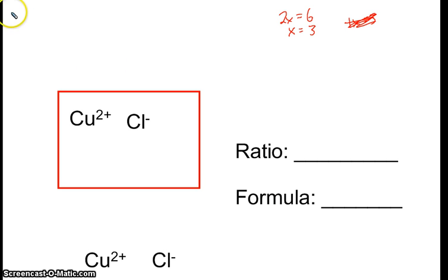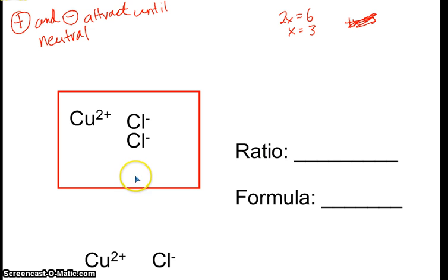Now the key to all of this is that pluses and minuses attract until it's all neutral, until there's no more pluses and minuses. Now here we've got two pluses, we got one minus. It's not neutral, there's more pluses, so another minus is attracted. Now we've got two pluses and one, two minuses. So our ratio is one copper to two chlorides. First of all we make it neutral, and then we count how many copper ions there are. There's one, there's a chloride, and there's another chloride.